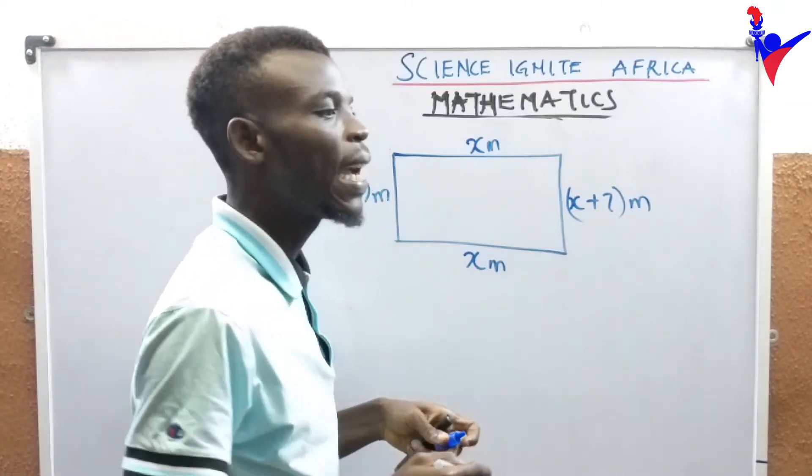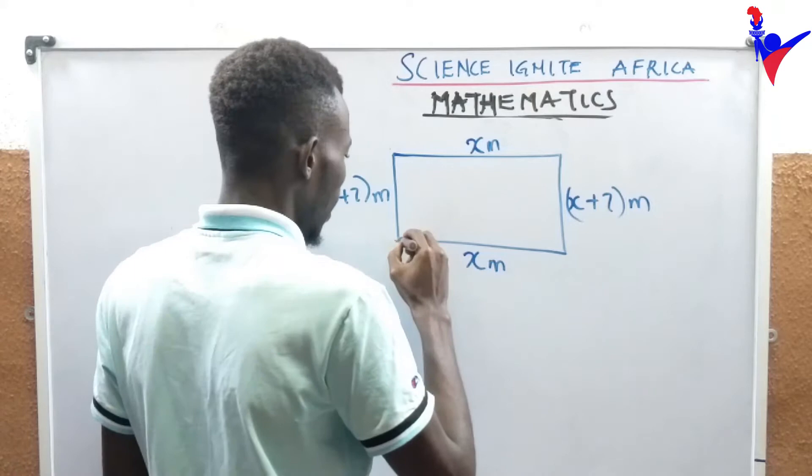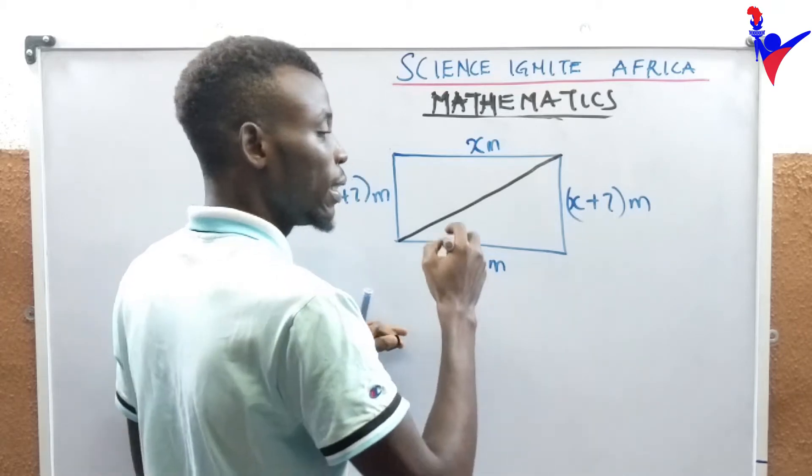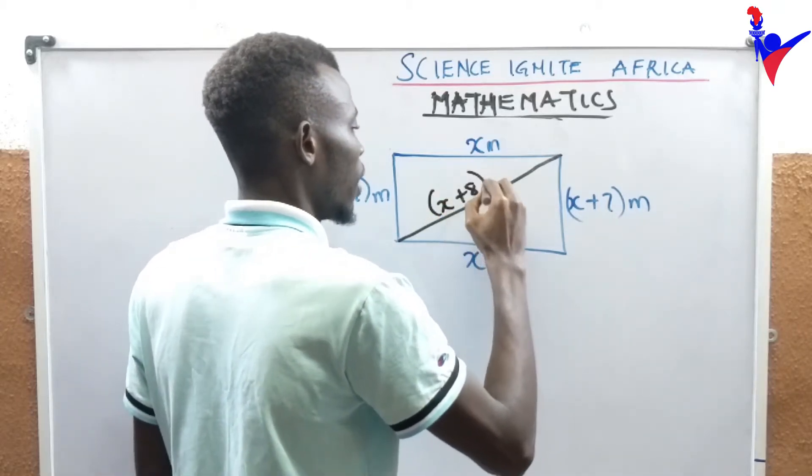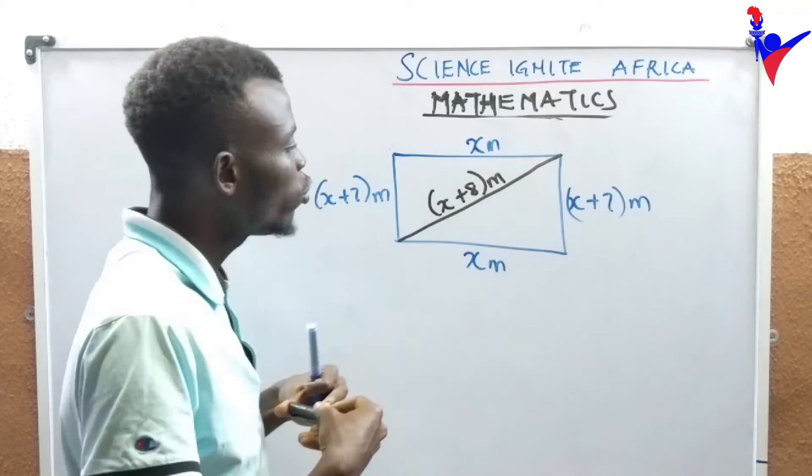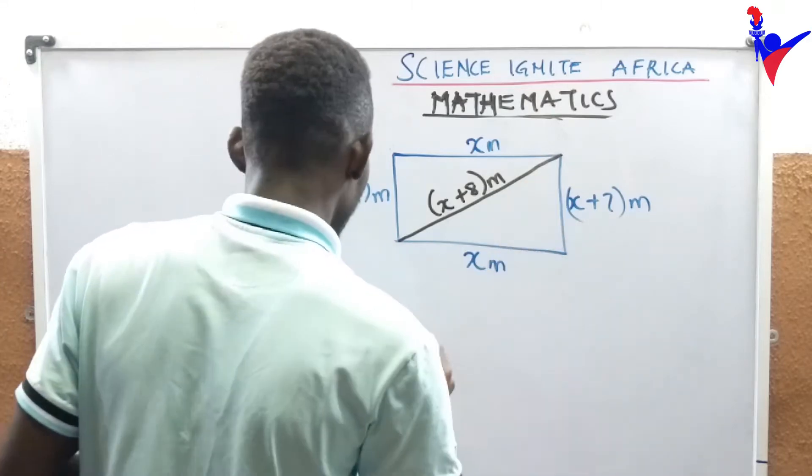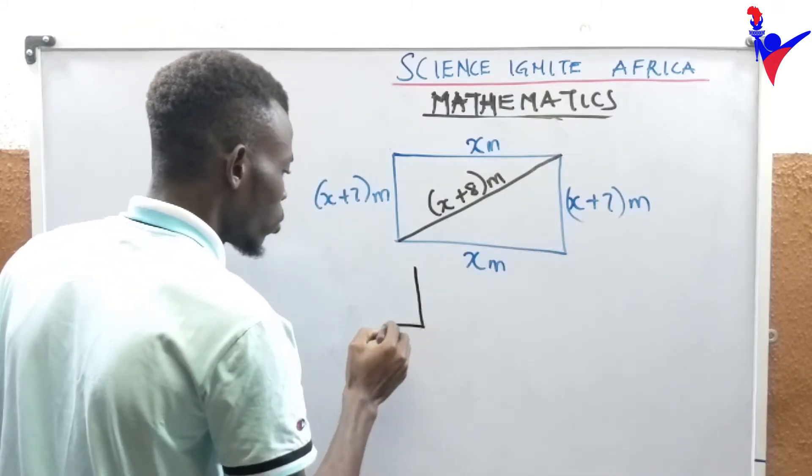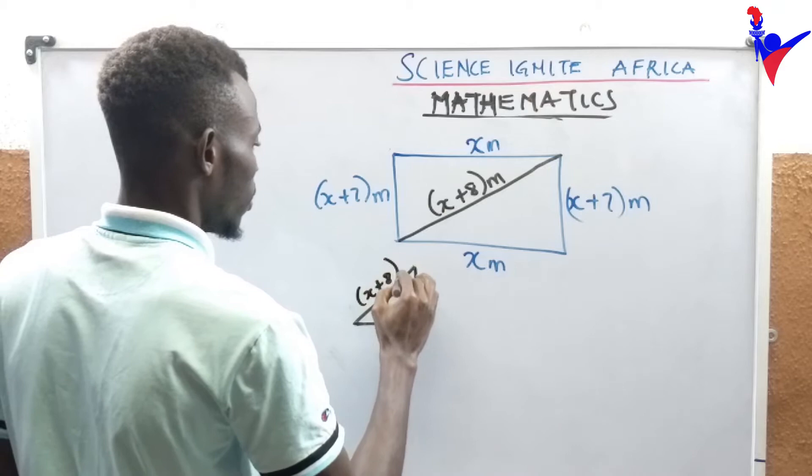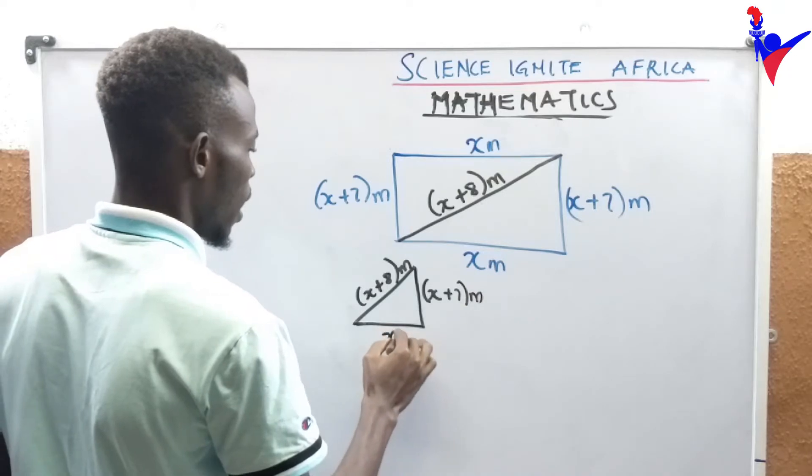The diagonal of the floor is x plus 8 meters. So we have x plus 8 meters, x plus 7 meters, and this is x meters.